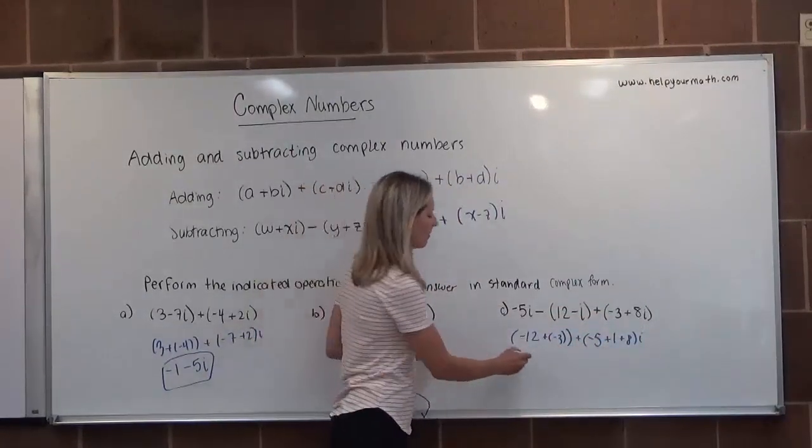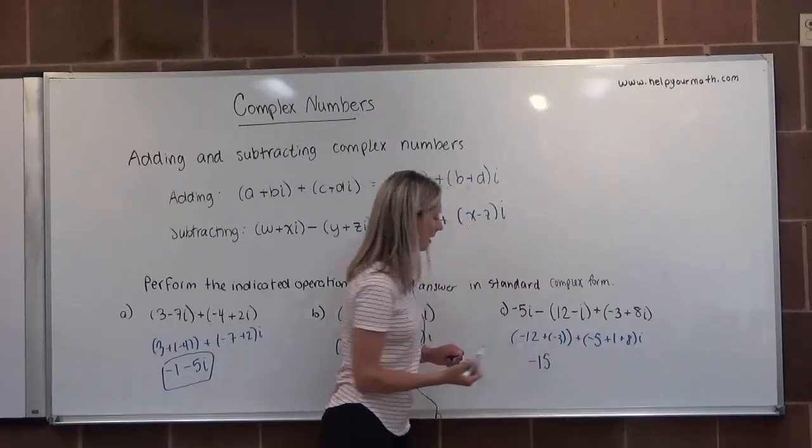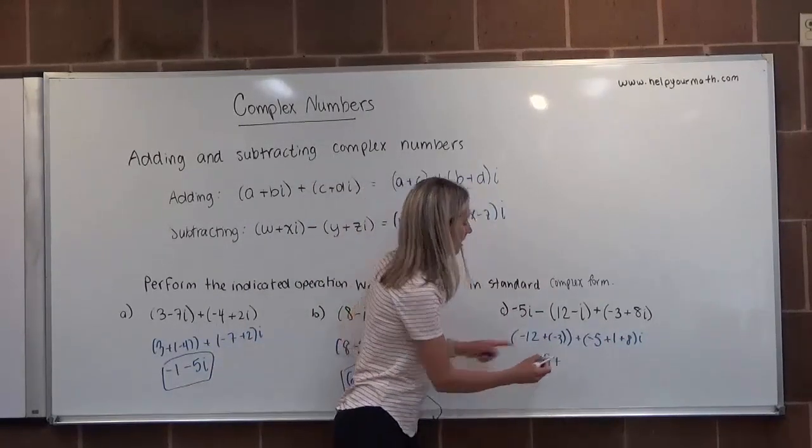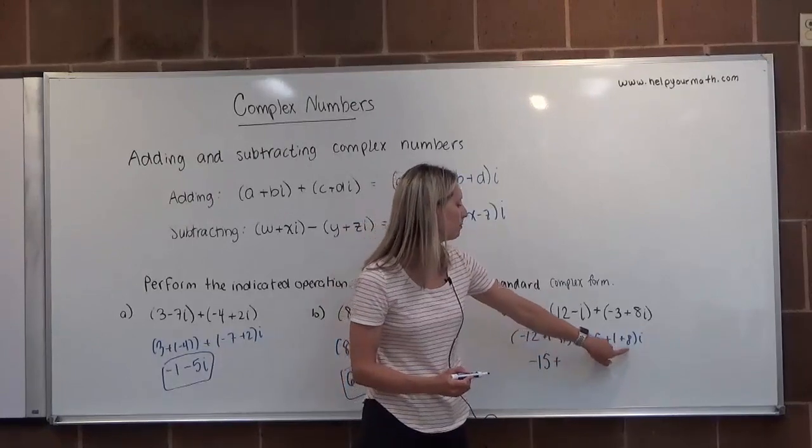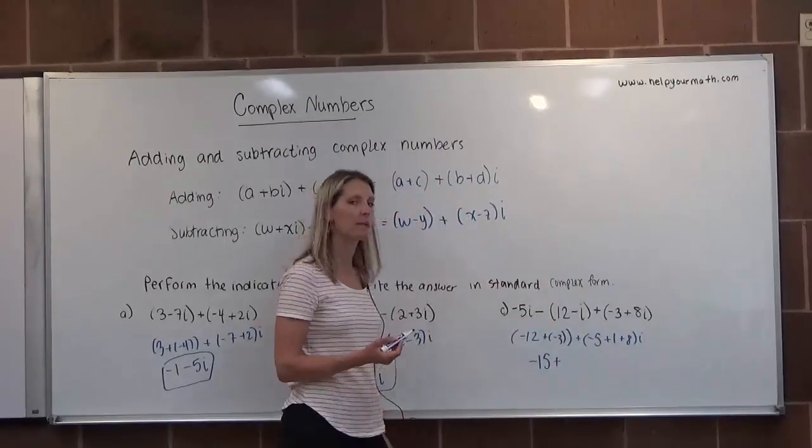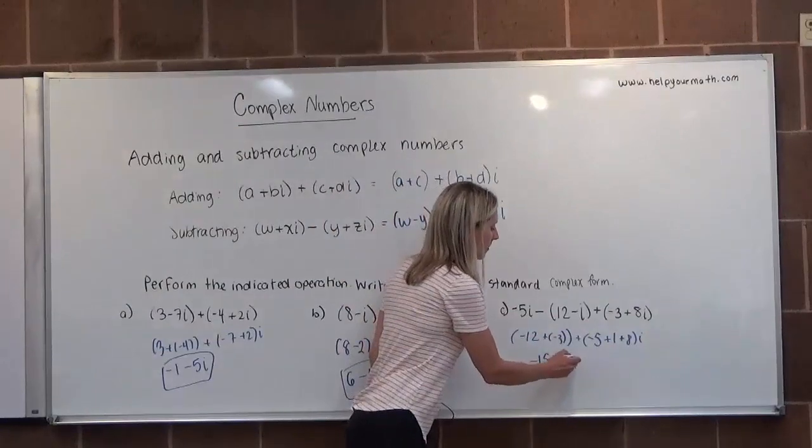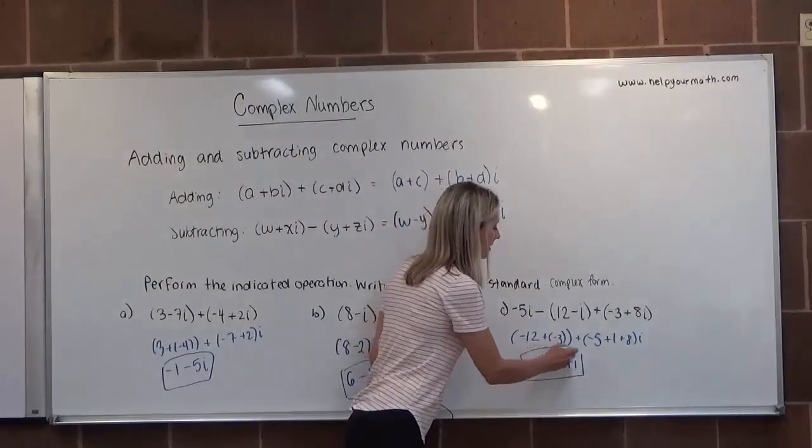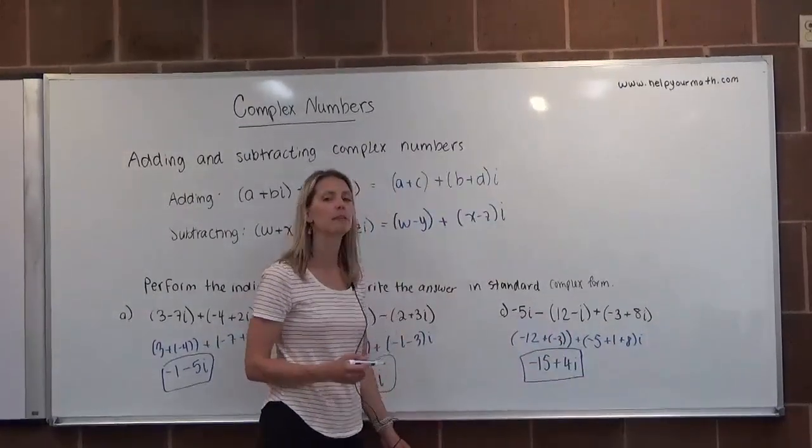Negative 12 and negative 3 make negative 15. And before I put a sign, it's going to be plus. Negative 5 plus 1 plus 8, that would be negative 5 plus 9, which would be positive 4I. So when we combine these three complex numbers in letter C, we get negative 15 plus 4I.